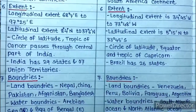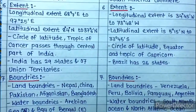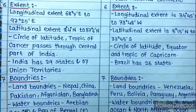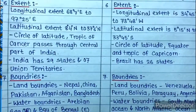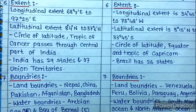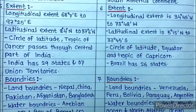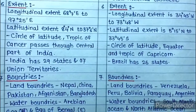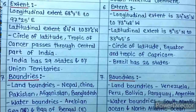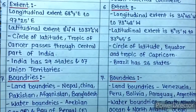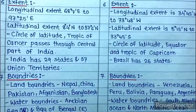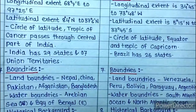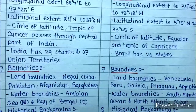Next is extent. The longitudinal extent of India is 68°7' East to 97°25' East. The longitudinal extent of Brazil is 8°4' to 34°25' West. The latitudinal extent of India is 8°4' North to 37°6' North, and Brazil's latitudinal extent is 5°15' North to 33°45' South. Regarding circles of latitude, the Tropic of Cancer passes through the central part of India, whereas both the equator and the Tropic of Capricorn pass through Brazil.